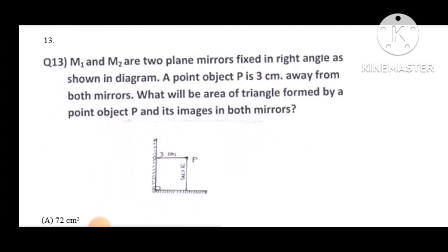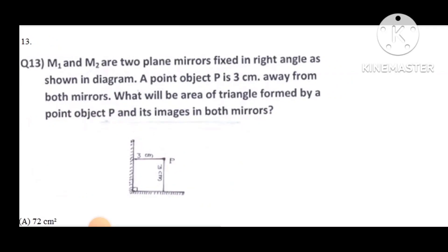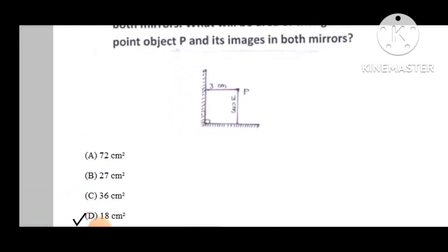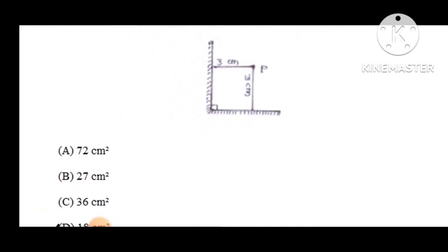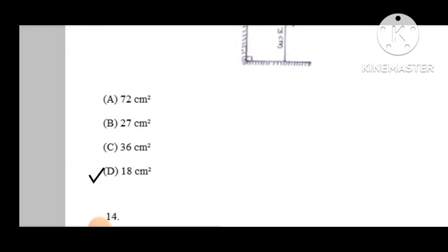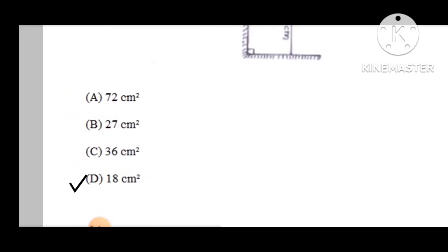Question number 13: M1 and M2 are two plane mirrors fixed at right angles as shown in the figure. A point object P is 3 cm away from both mirrors. What will be the area of the triangle formed by point object P and its images in both mirrors? The correct option is D — 18 centimeter square.